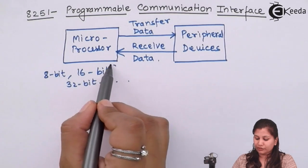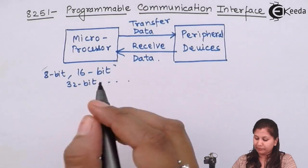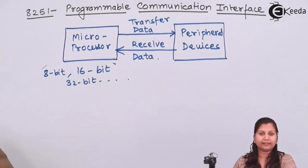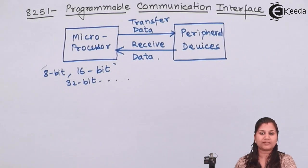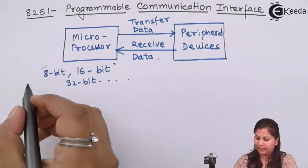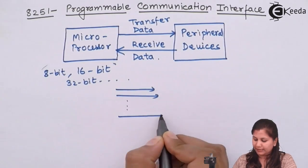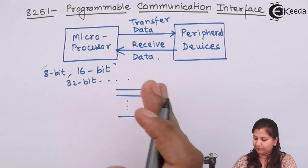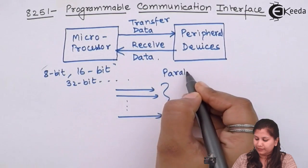When such a large amount of data — say 8 bits — has to be transferred, these 8 bits can be transferred either in parallel transmission or through serial transmission. Parallel transmission means all 8 bits are transferred at the same time. This type of transmission is called parallel transmission.